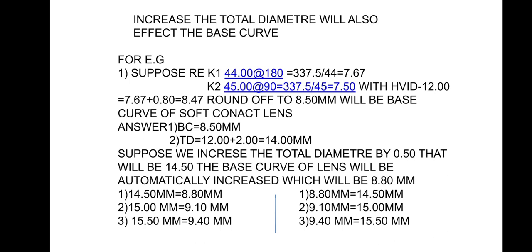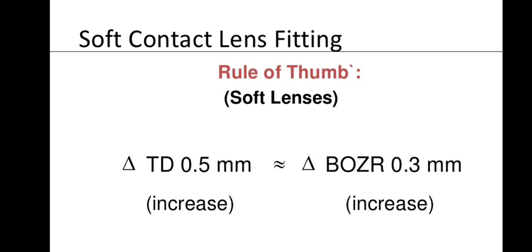If total diameter is increased by 0.5 mm from 14 to 14.5 mm, the base curve automatically increases to 8.80 mm. At 15 mm diameter, base curve = 9.10 mm; at 15.5 mm, base curve = 9.40 mm. Diameter and base curve are proportional: increasing total diameter by 0.5 mm increases the back optic zone radius by 0.3 mm.